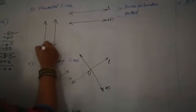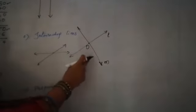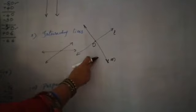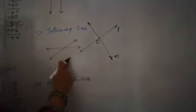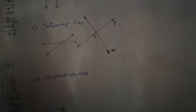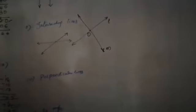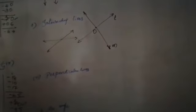Any examples you can give children for parallel lines? A flowing river you can give, and railway tracks you can give as an example. For intersecting lines, the letter X you can give, and crossroads also you can give.